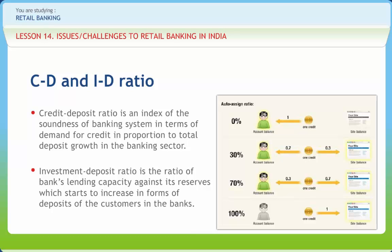During the recession in the economy and steeply falling share prices in the share market, the incremental credit deposit and investment deposit of retail sector banks mirrored the bank's behavior in respect of investment and credit. As cyclical factors led to a cooling off of credit growth rate, the trend in incremental CD ratio and ID ratio reversed. The slowdown in credit growth is reflective of companies deferring investment against the backdrop of widespread uncertainty during the recession. As a result, the incremental ID ratio rose, notwithstanding the softening of interest rates.